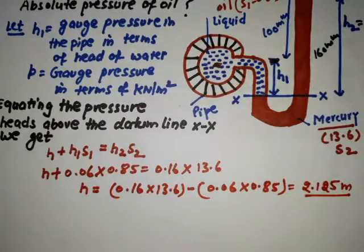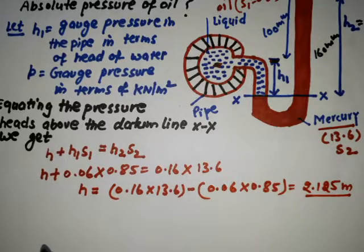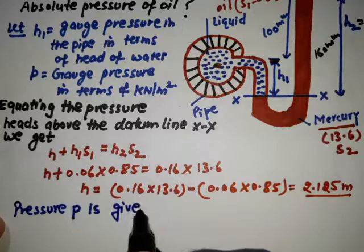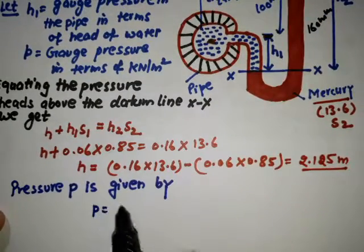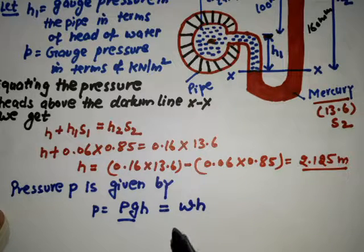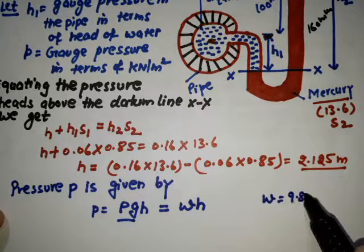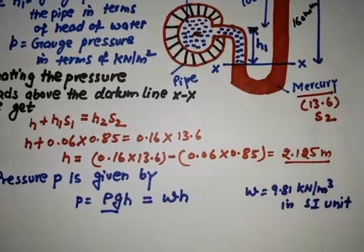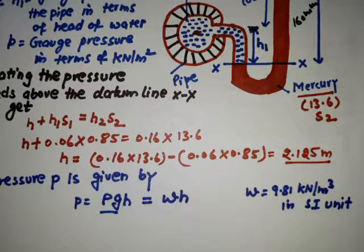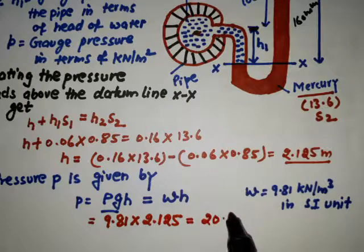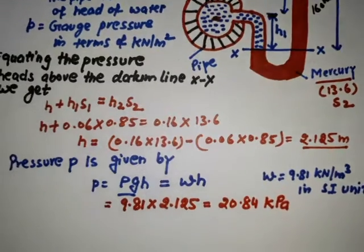Now that we have H = 2.125 m, we can find the gauge pressure. The pressure P is given by P = ρgH, where the specific weight of water is 9.81 kN/m³ in SI units. Substituting: P = 9.81 × 2.125 = 20.84 kPa. So the gauge pressure of oil is 20.84 kPa.